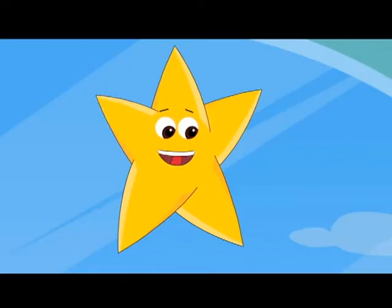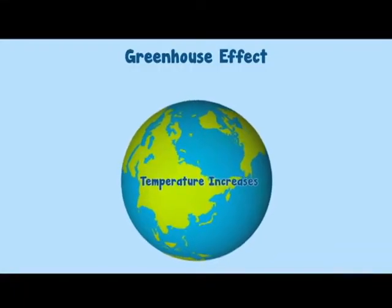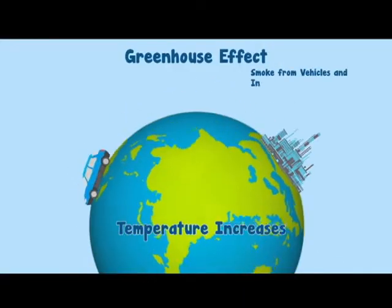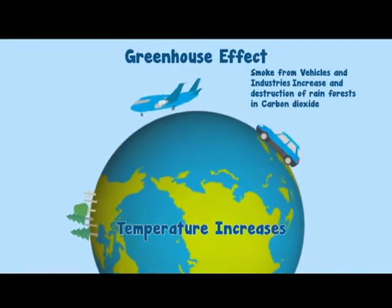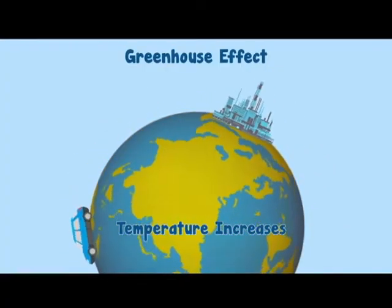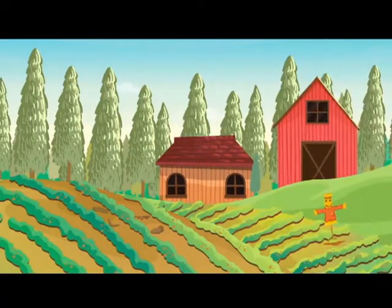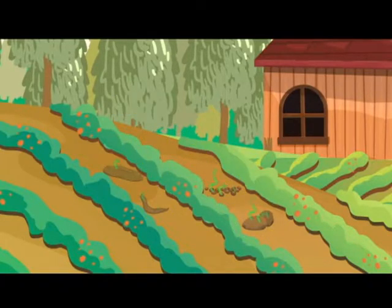Carbon dioxide and the other gases are called greenhouse gases. Excess burning of fossil fuels, smoke from vehicles and industries, and destruction of rainforests cause an increase in the amount of carbon dioxide produced. If this increase continues at the present rate, more heat will be trapped and the temperature of the earth will increase. Another greenhouse gas is methane — animal dung used as natural fertilizer in fields gives out methane gas to the atmosphere, causing the earth's temperature to rise.